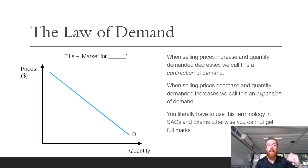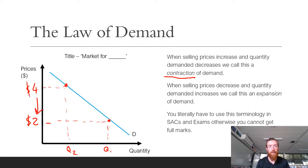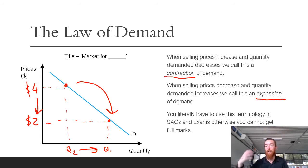When selling prices increase, quantity demanded decreases — we call this a contraction of demand. Looking at a fictional market with prices at $2 and $4, if price increases we move from Q1 down to Q2 along the demand curve. The opposite — a price decrease from $4 to $2 — increases quantity demanded, moving along the line to a new point. We call that an expansion of demand. Use these terms specifically when the selling price changes.